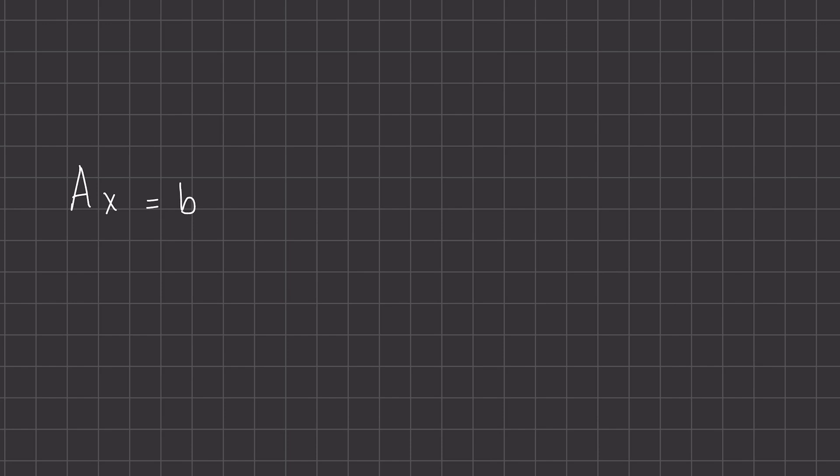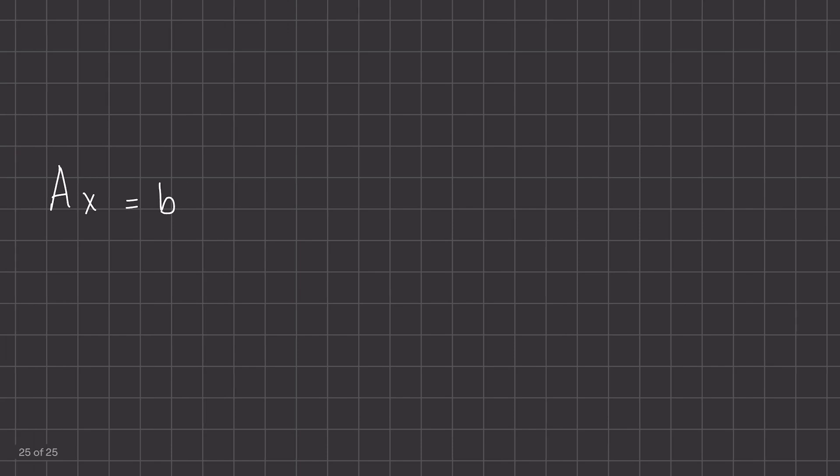Matrices have something which are called inverses. Now these are similar to how we understand inverses for numbers like two. So the inverse, which is always to the power of negative one, of two would be one half.